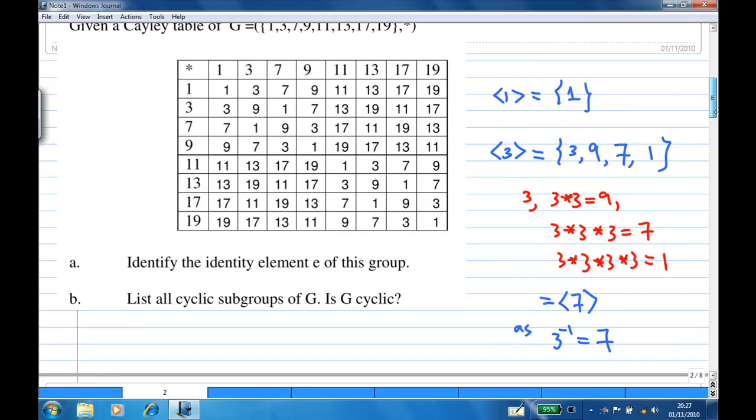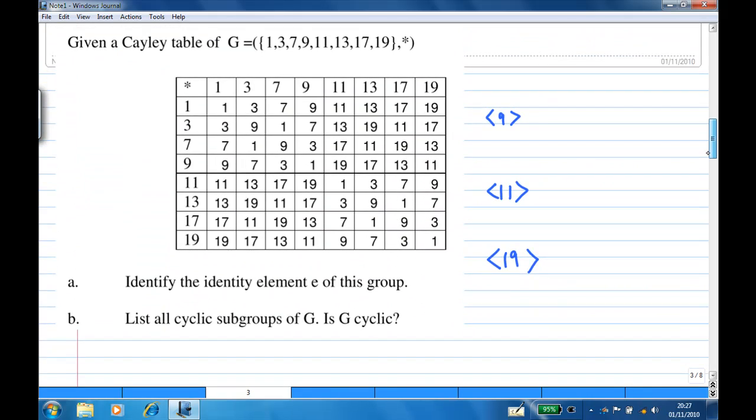Now, let's look at other cyclic subgroups. Let's look at the cyclic subgroup generated by 9. We start with 9, and 9 star 9 happens to be 1. So that is the cyclic subgroup generated by 9.